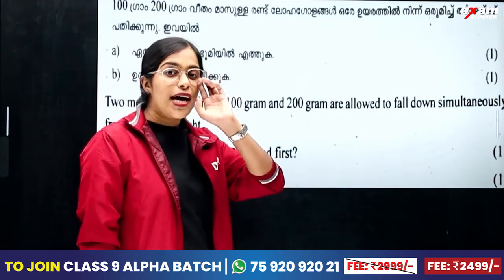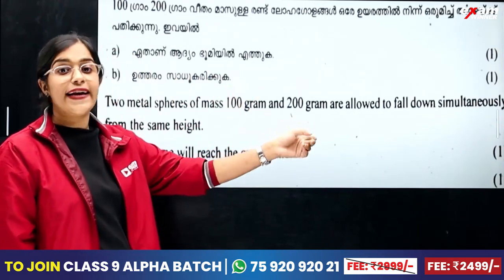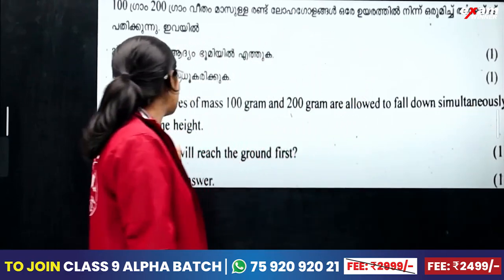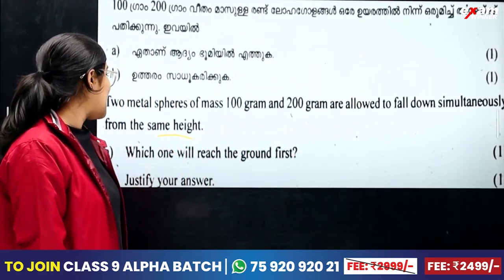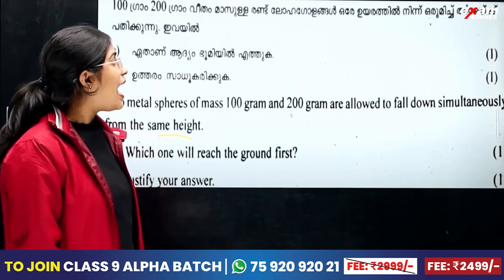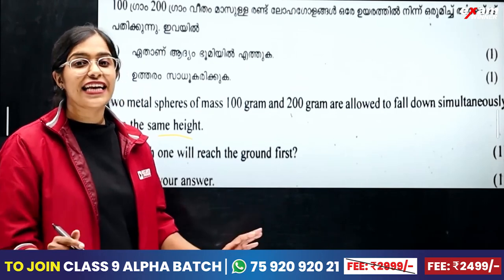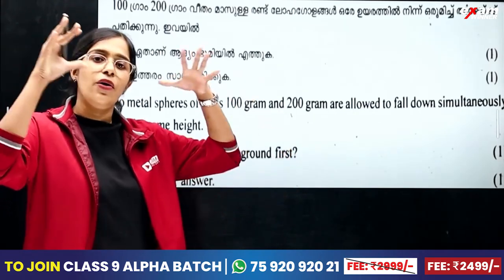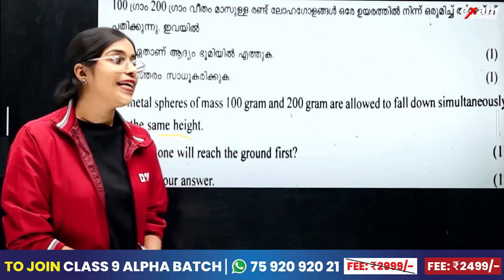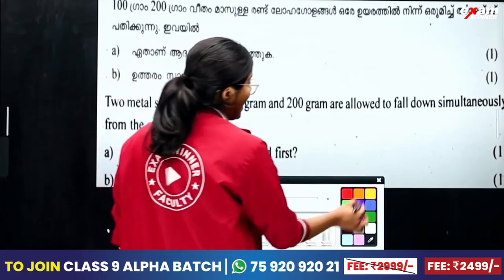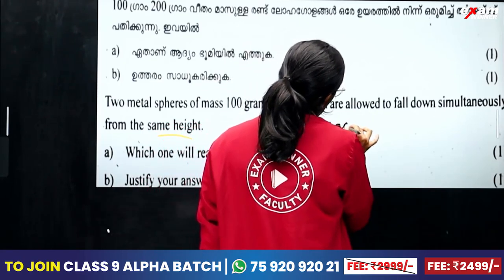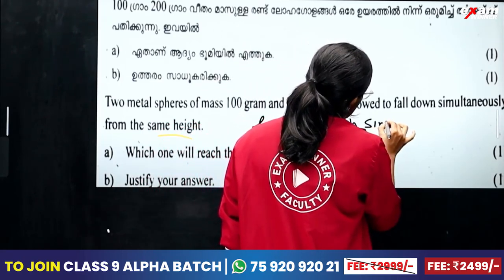Two metal spheres of mass 100 grams and 200 grams are allowed to fall simultaneously from the same height. Which one will reach the ground first? Both will reach the ground simultaneously.